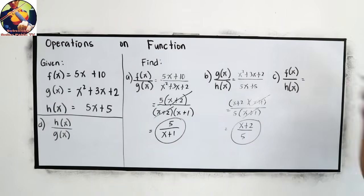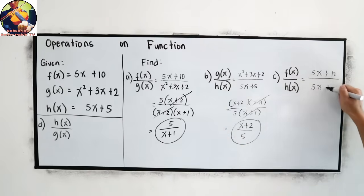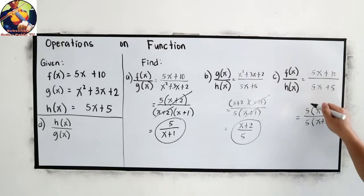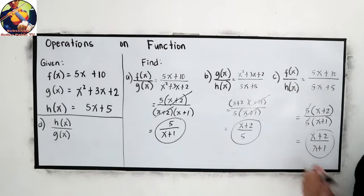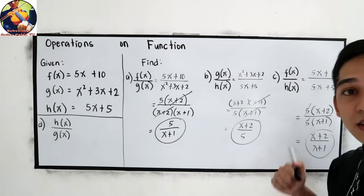Let's try letter C. f of x, copy 5x plus 10 over h of x, 5x plus 5. Now, factor out. The common factor in the numerator is 5, then x plus 2 over denominator 5x plus 1. So we can cancel 5. Our final answer is x plus 2 over x plus 1. Did you get letter C? Did we have the same answer?